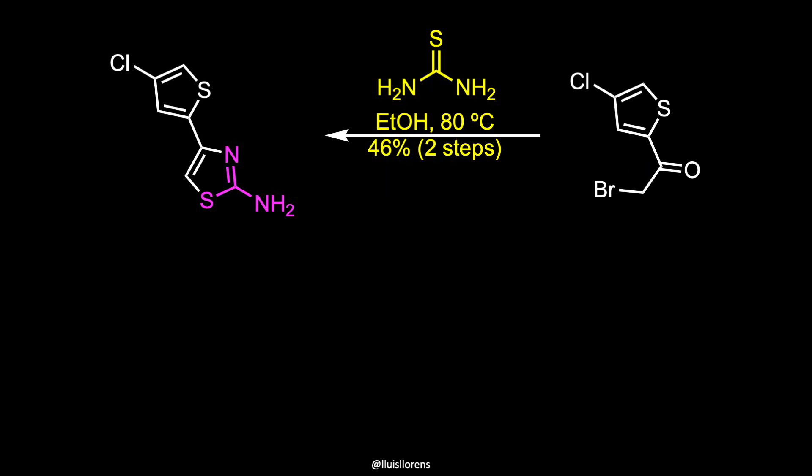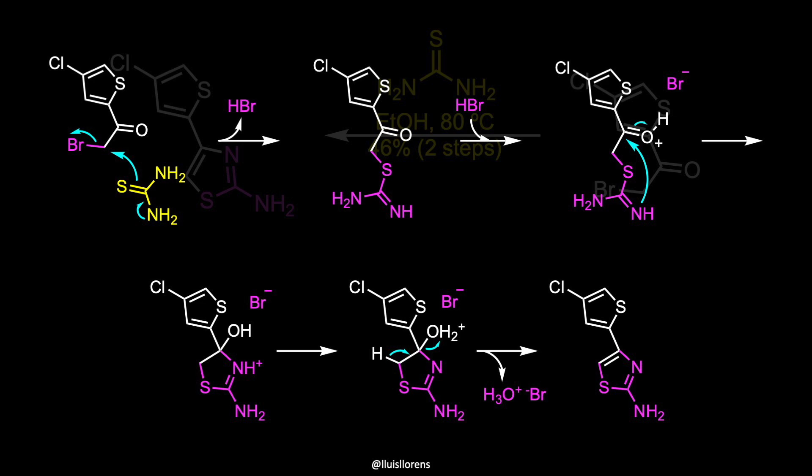both the nitrogen and the sulfur act as nucleophiles. So, which one attacks the carbonyl and which one attacks the halogen?